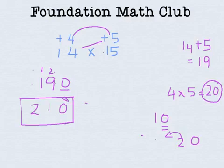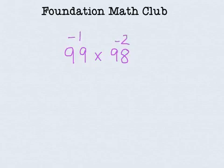Now let's take the next example where the base is 100. Let us take 99 times 98. How far from the base? 100 minus 1 gives us 99. And 100 minus 2 gives us 98.